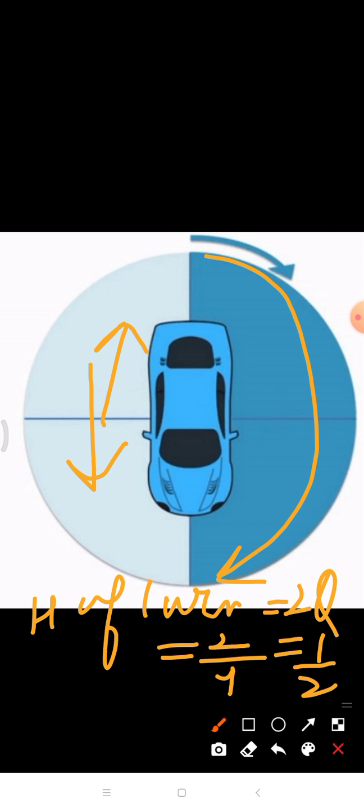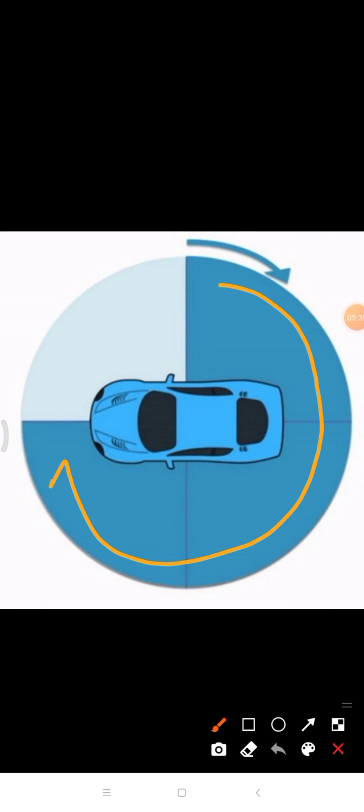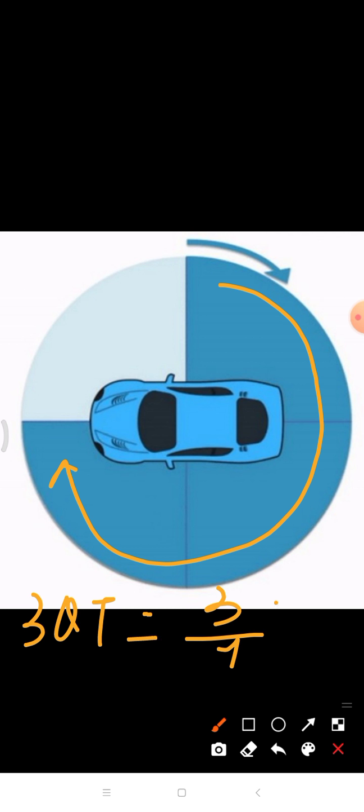I hope the half turn is clear to you. Now we have the three-quarter turn. The car reads the third line and has turned through three of the four parts of the circle. A three-quarter turn is equal to three-fourths of the full circle.